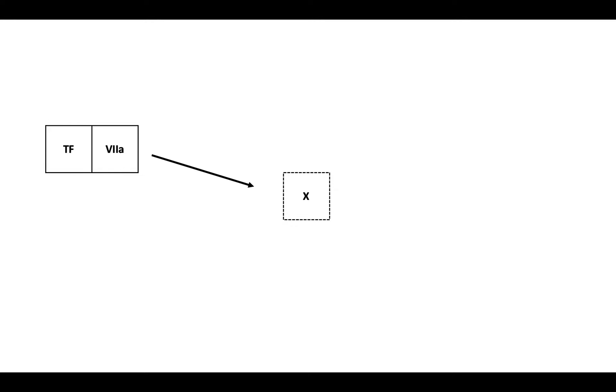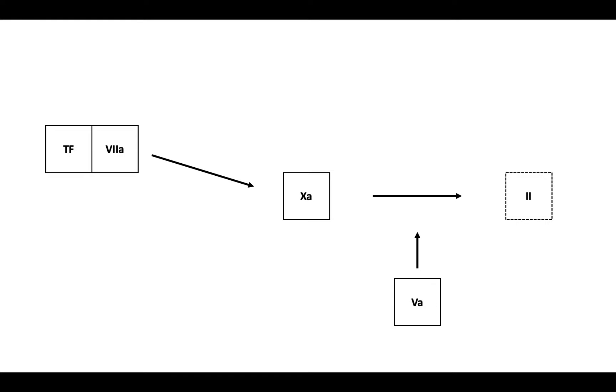Let's start with a brief review of the coagulation cascade. To initiate coagulation, tissue factor combines with factor VII to activate it to VIIa and form the tissue factor-factor VIIa complex, which acts on factor X to activate it to Xa. Xa acts in the presence of its cofactor, Va, to activate prothrombin to thrombin.